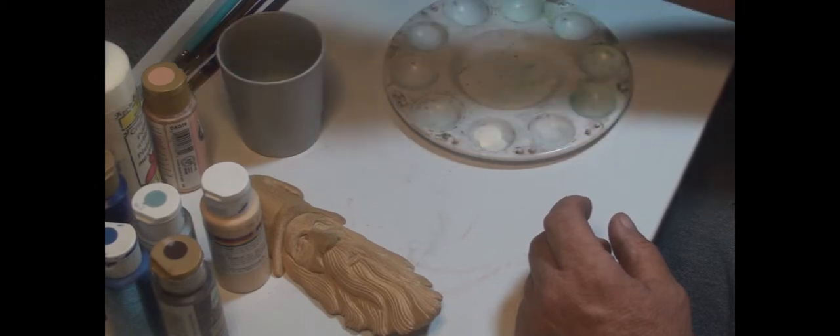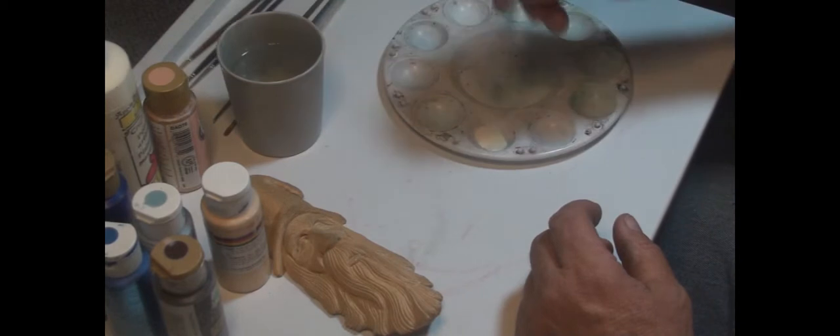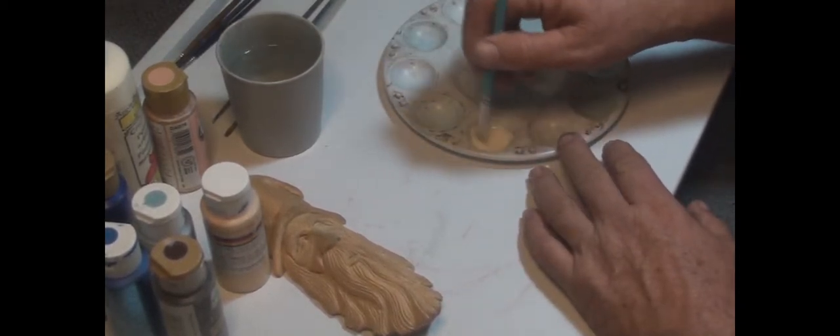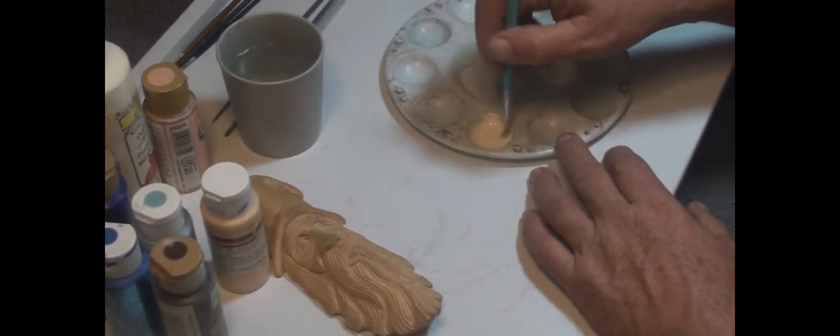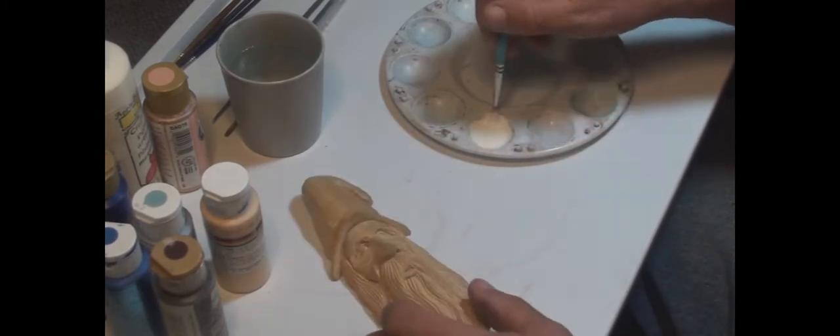So I'm going to put some water in here and just see how thin it's going to be. And you probably want to be able to read newsprint through it. I'm just going to stir it up, mix it up real good. You also, if you want to, can use extender medium. I do a lot of times but I'm not going to on this one.